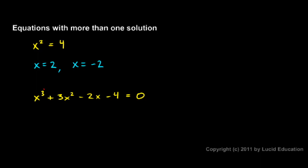There's an exponent there that is a 3. We call this a third degree equation. And a third degree equation can have three solutions, and so on.